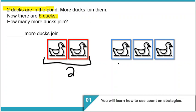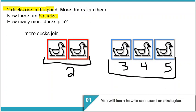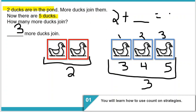So I'm going to say two, three, four, five. That gets us to our five ducks. And I know that this new group is one, two, three — so it would be three. Three more ducks join them. In this problem, two plus blank equals five, and I know that blank would be three because three more ducks join them.